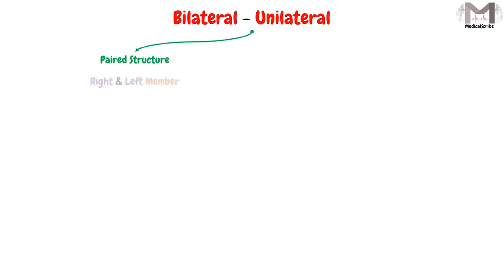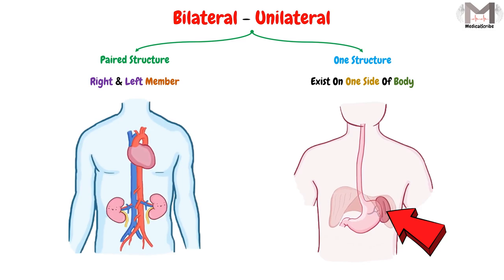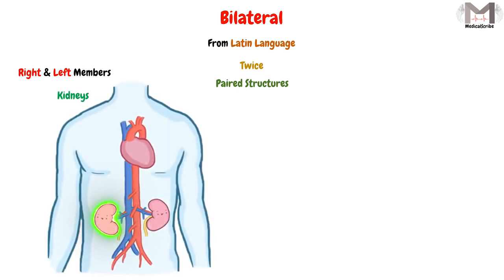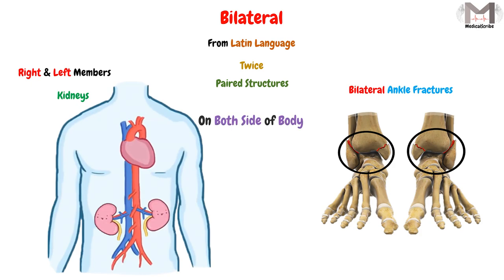These two terms — bilateral and unilateral — tell us whether a structure or organ is a paired structure having a right and a left member, or only one structure that exists on one side of the body. Bilateral is a term derived from the Latin language meaning twice, and it describes paired structures which have a right and a left member, like the kidneys. Because there is a kidney on the right side of the body and another one in the same position on the left side. If we say bilateral ankle fractures, that means a fracture occurred to both ankles. So bilateral means on both sides of the body.